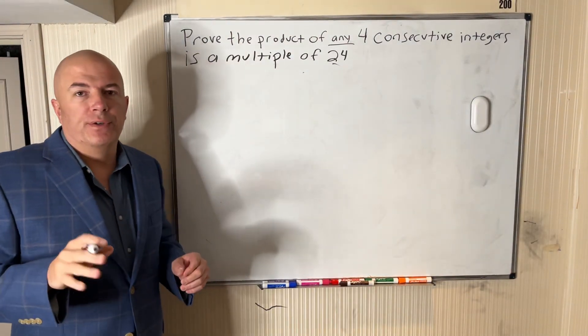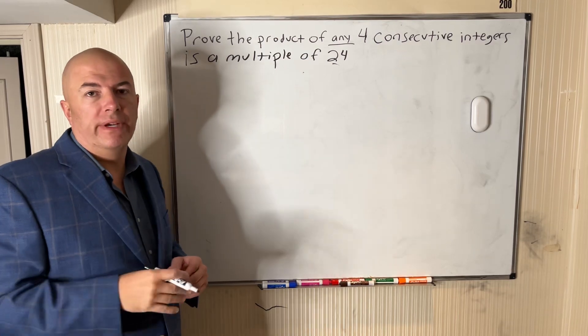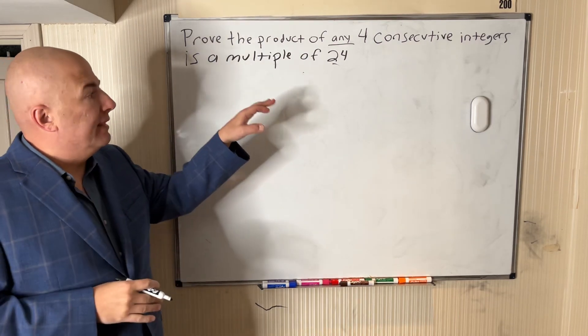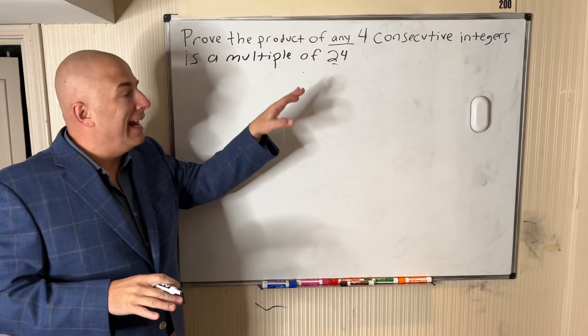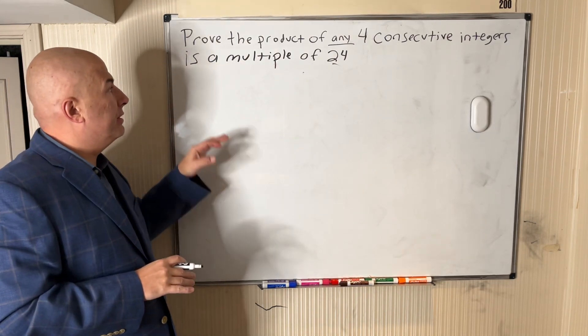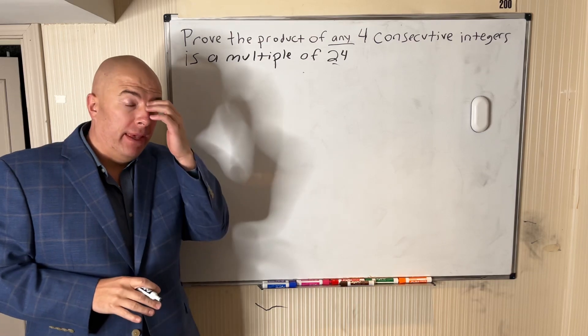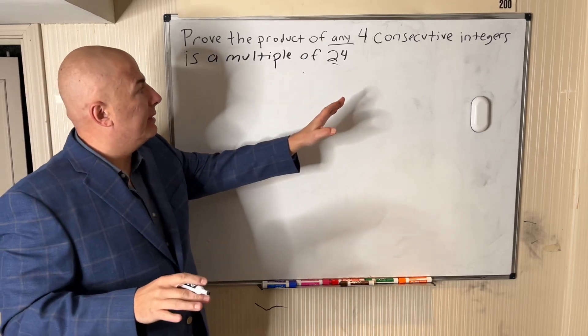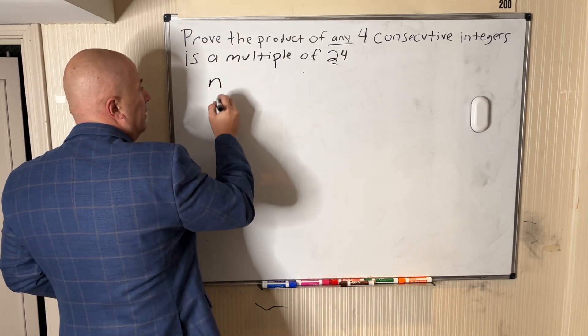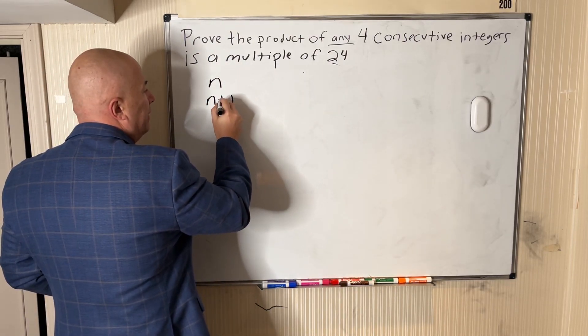Let's talk about another proof you'll come across in algebra or pre-algebra with consecutive numbers. The problem asks: prove the product of any four consecutive integers is a multiple of 24. We're going to do an exhaustive case here, so we'll take the first number of the sequence as n, which means the second consecutive integer is n+1.